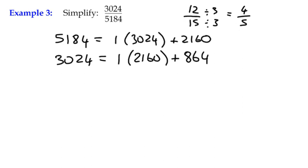We need to keep going. So 2,160 moves over to the left, and 864 moves up. And this time we can divide 864 into 2,160 two times, leaving us with a remainder of 432.